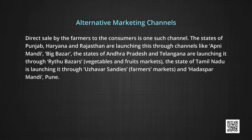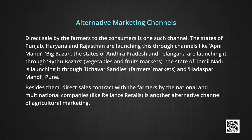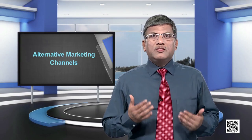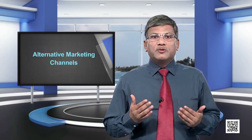The state of Tamil Nadu is launching it through Ujhabar Sandis — farmers markets — and Hassapar Mandi, Pune. Besides these, direct sales contracts with farmers by national and multinational companies like Reliance Retail is another alternative channel of agricultural marketing. These companies are offering advance payments to farmers for the cultivation of the desired quantity of farm products at predetermined rates. These systems of marketing would grow with the growth of national and multinational retail, helping expand markets for farm products and reduce price risk for small farmers.